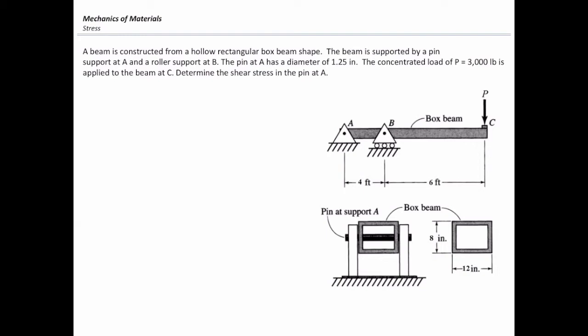First is using free body diagram to determine what is the internal force at that point. Second step is determining the cross-section area A. And last is dividing force by area.